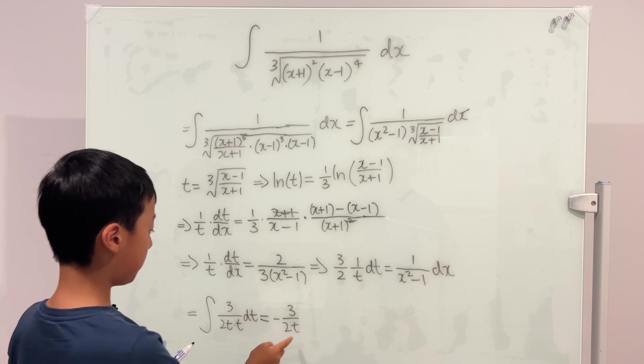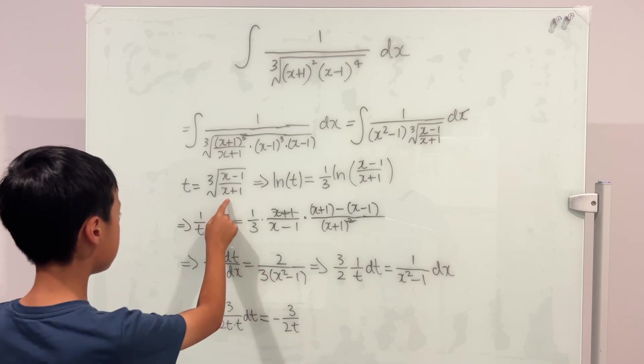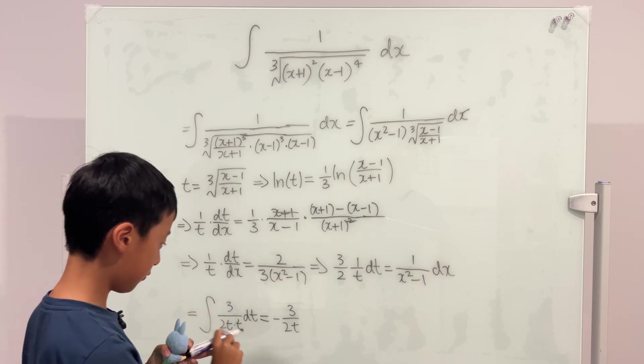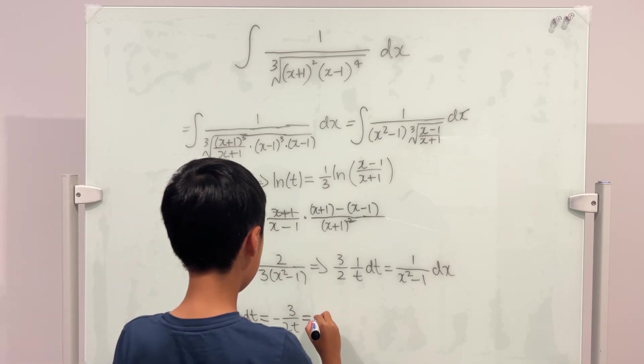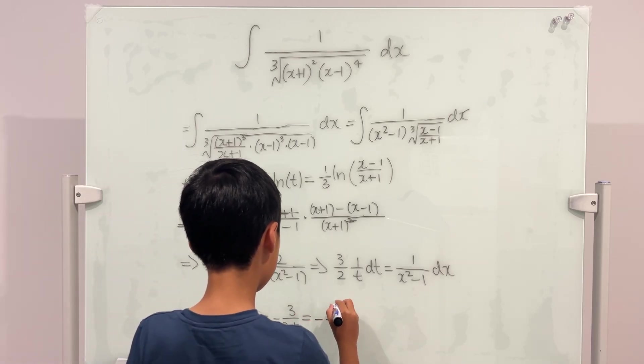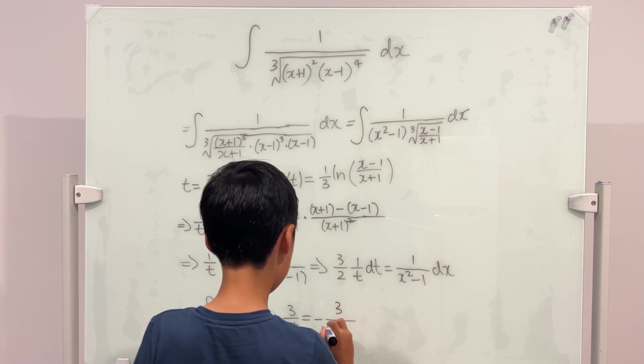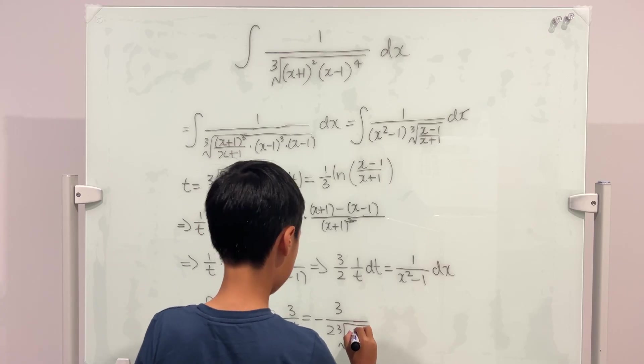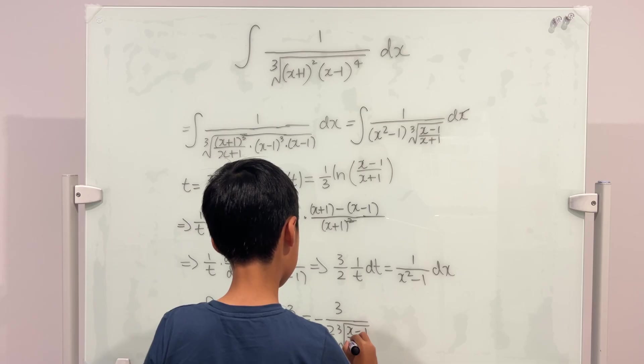And now, we can plug back in t. And t is equal to the cube root of x minus 1 over x plus 1. And this is equal to negative 3 over 2 times the cube root of x minus 1 over x plus 1.